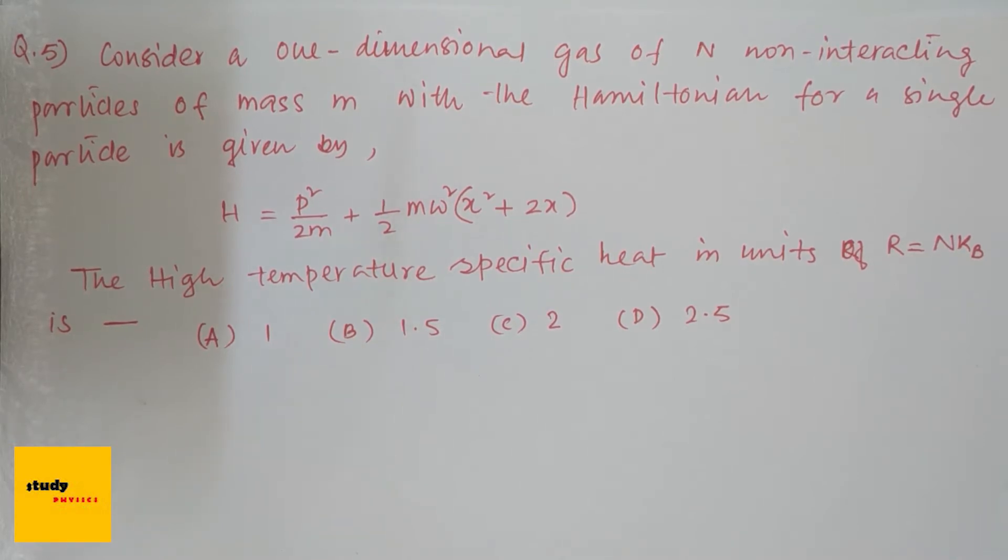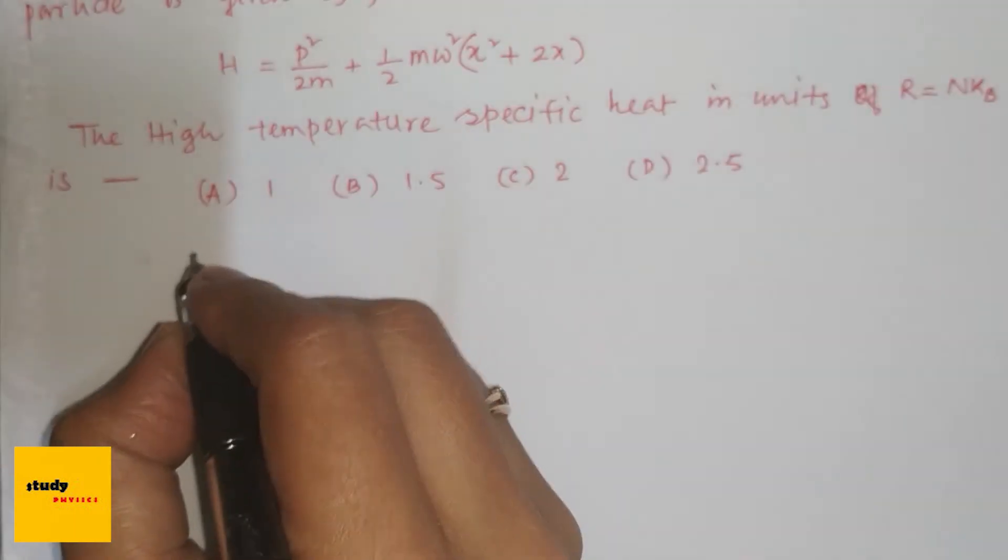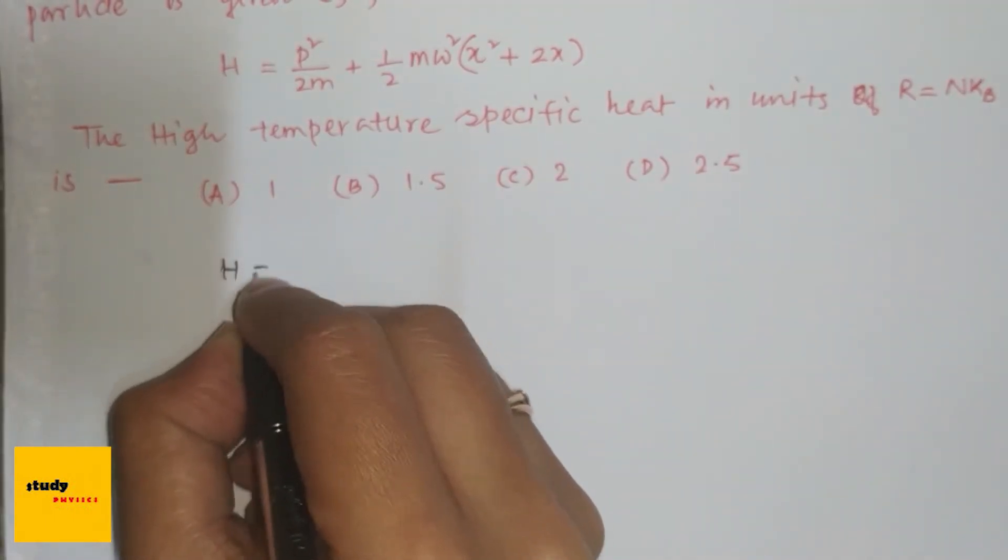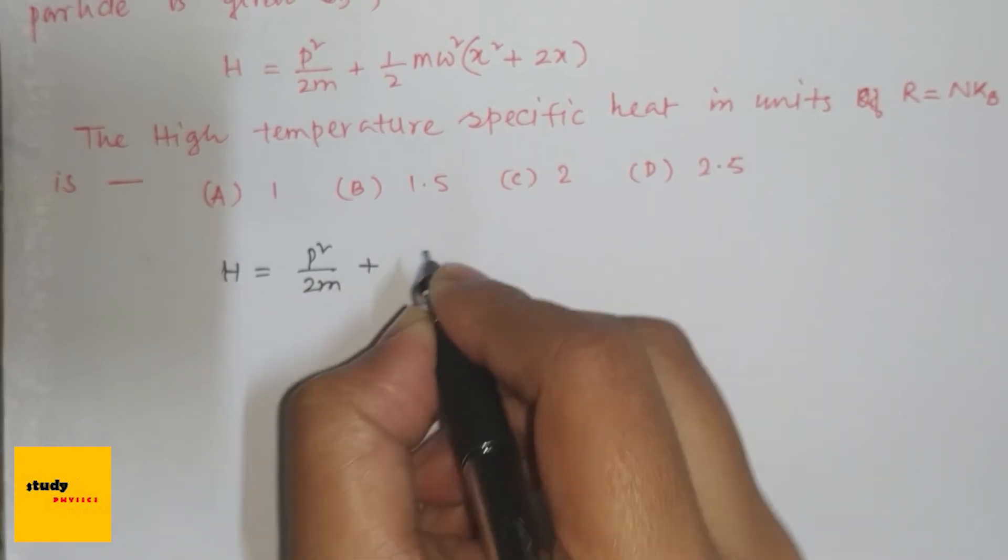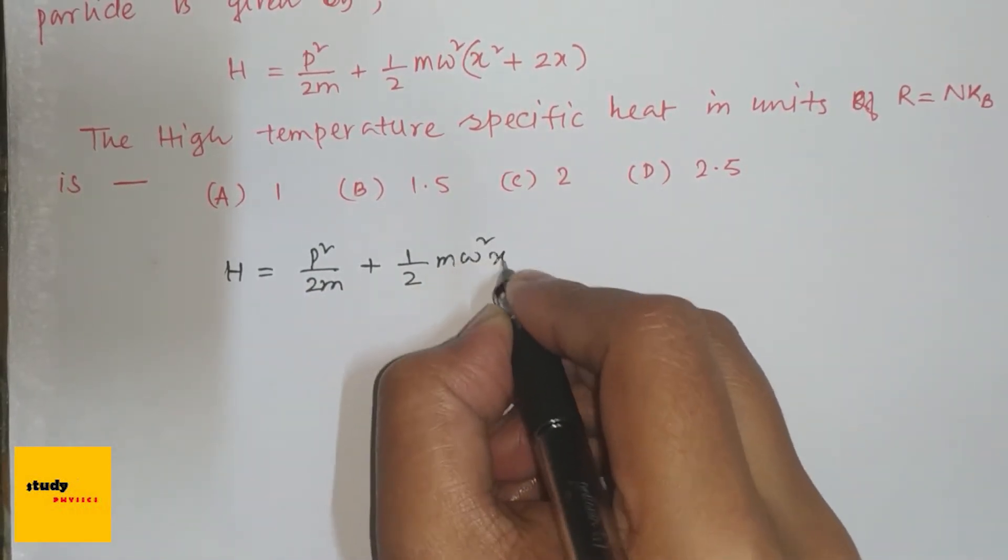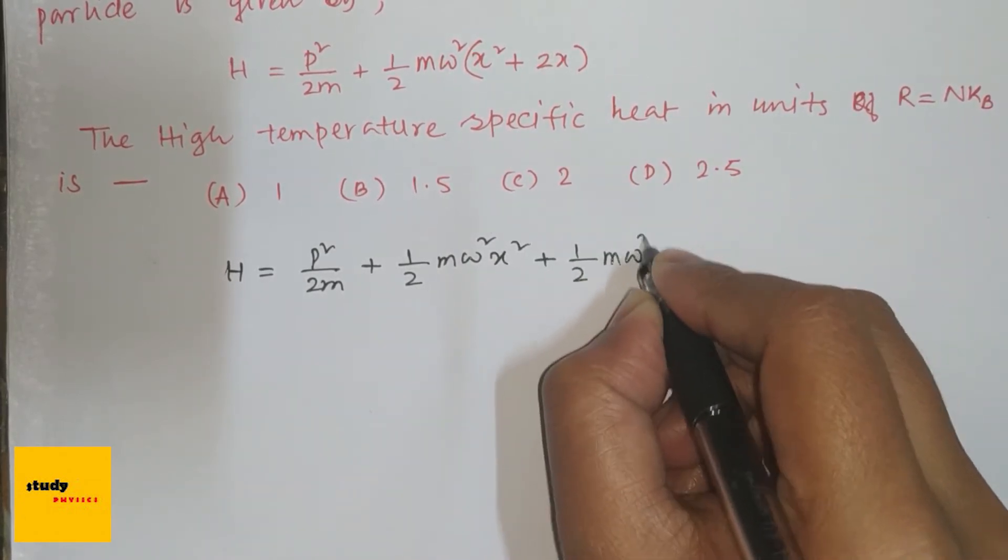The high temperature specific heat in units R equals N k_B is, and these are the four options. So first, write the Hamiltonian: H equals p squared by 2m plus half m omega squared x squared plus half m omega squared into 2x.